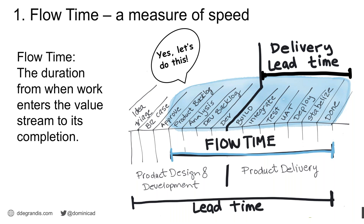Cycle time is such an ambiguous term — it has multiple definitions depending on whether you're in manufacturing or software. In my workshops helping people make their work visible and find bottlenecks, I thought: just start the clock wherever it makes sense in your context. It's your value stream — at what point do you want the clock to start? I learned that business people and product owners were actually interested in how long something took once they decided it would be a good thing to do, which is why I started using 'flow time' — it starts the discussion on what time frame is most important to measure for your organization.